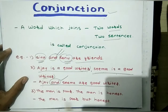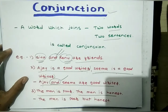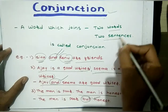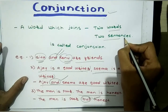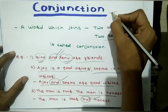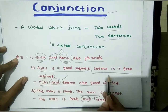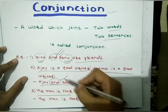Another example: 'The man is poor and the man is honest.' Using conjunction, this becomes 'The man is poor but honest.' So here, 'and' and 'but' are conjunctions joining two words and two sentences — connecting them together.